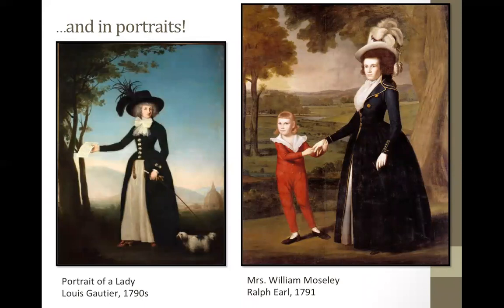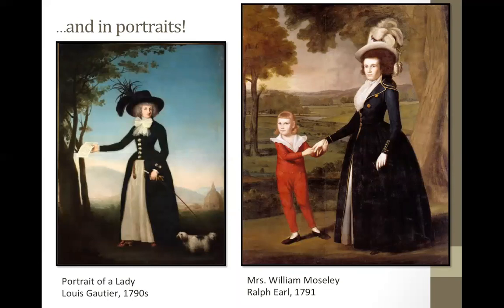Here are two redingotes in portraits — both black, but showing some variety. There's a difference in skirt placement: whether it almost closes in front or is set back farther along the waist, similar to an Italian gown. You can see different uses of cravats at the neck — definitely inspired by men's fashion — differences in button placement, and piping in the one on the right. The hats are also incredible. There's also a child in the portrait wearing what looks like itchy long red underwear, which makes me want to go down a research rabbit hole on children's clothing of this period.